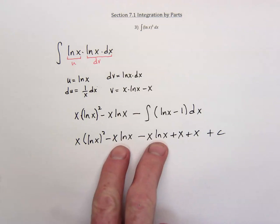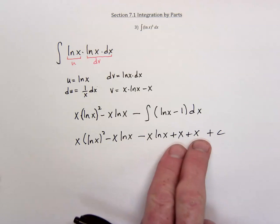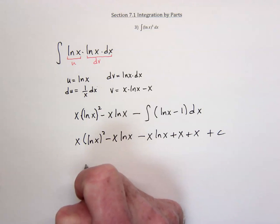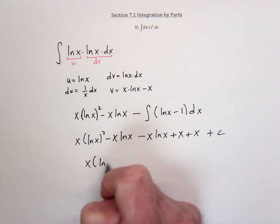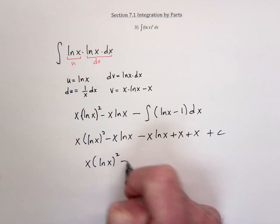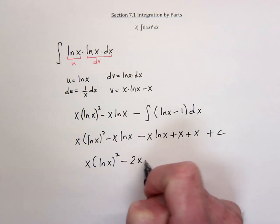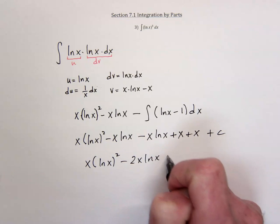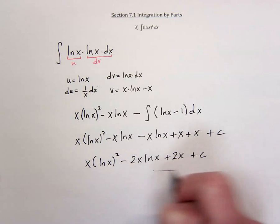And then let's see what we can combine. Well, these two can be combined, there's two of them. And these two, there's two of them. So we would have x natural log of x being squared minus two of them that look like x natural log of x and plus two x's and plus a c.